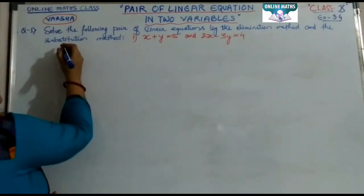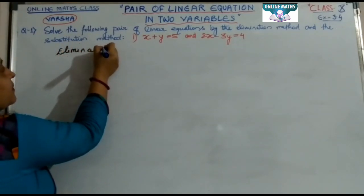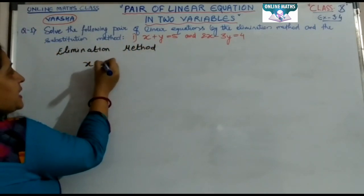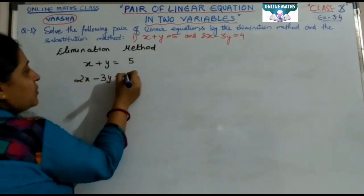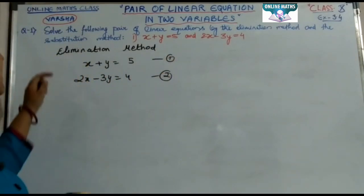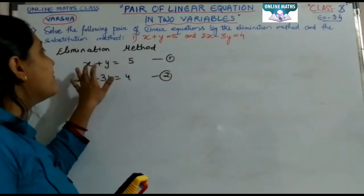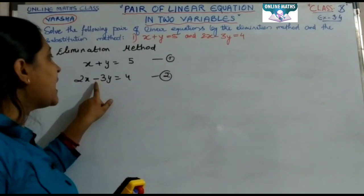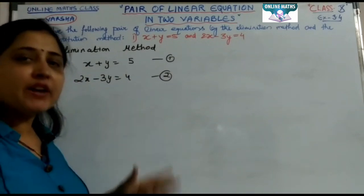First, I will teach you the elimination method. You have two equations: x plus y equals 5, and 2x minus 3y equals 4. This is equation one and this is equation two. In the first and second equations, look at the coefficients of x and y. The coefficient of x is 1, the coefficient of y is 1 and minus 3 respectively, and the constants are 5 and 4.